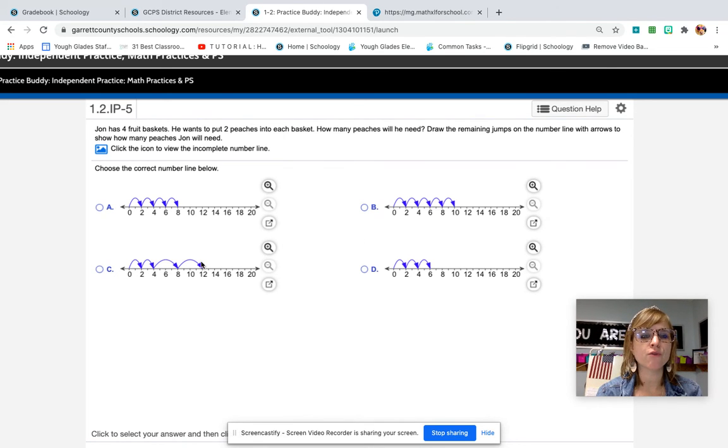One, two, three, four. Well, that shows four jumps. But let's look at this. Two peaches in each basket. Oh, wow. This number line doesn't even show equal groups. Check this out. It goes from zero to two, two to four, and then it jumps from four all the way to eight.